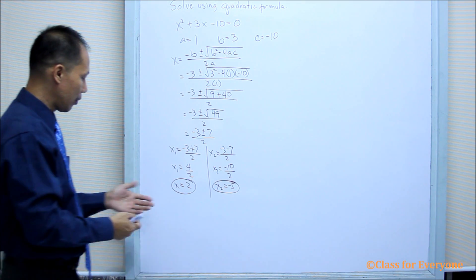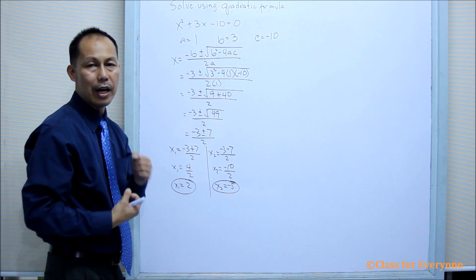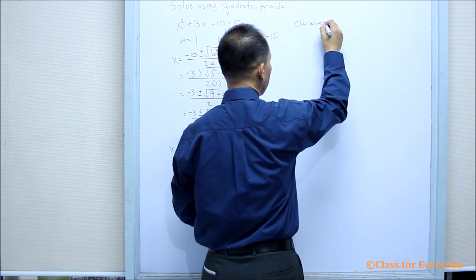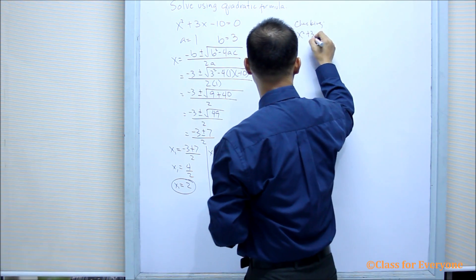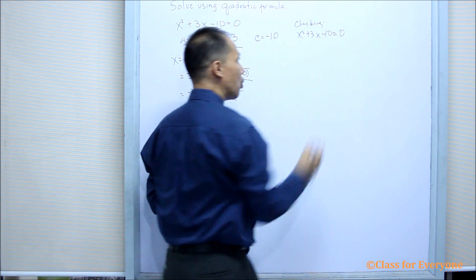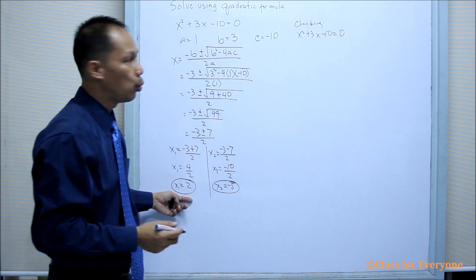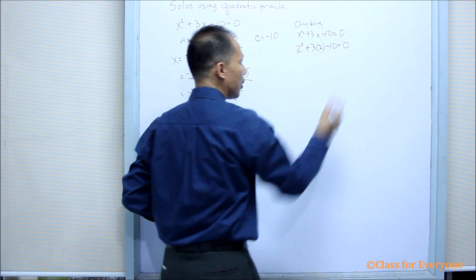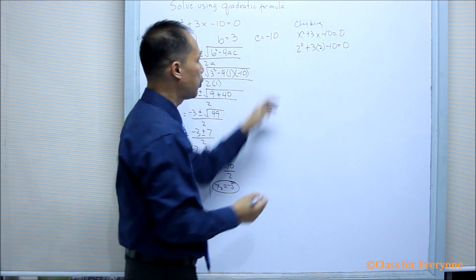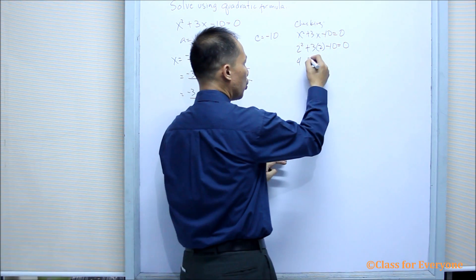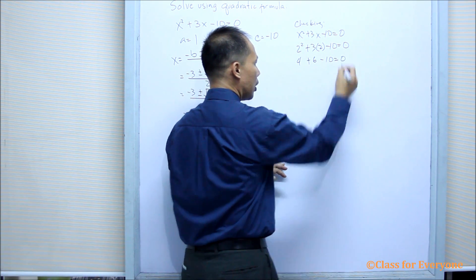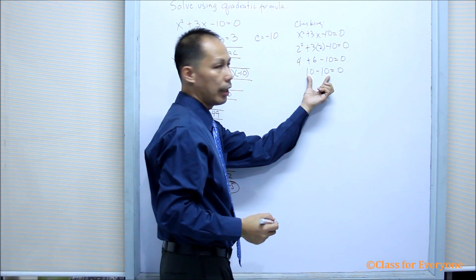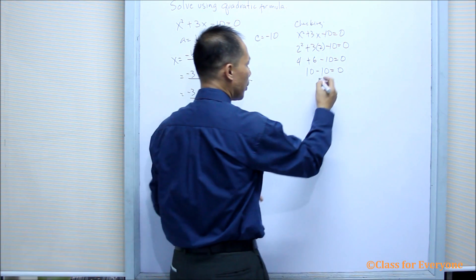But we're not done yet, because we have to find out if there is an extraneous root. So, checking against the original equation, we'll have x squared plus 3x minus 10 equals 0. When x is equal to 2, we'll have 2 squared plus 3 times 2 minus 10 equals 0. The square of 2 is 4, and the product of 3 and 2 is 6, so 4 plus 6 minus 10 equals 0. The difference of 10 minus 10 is equal to 0.